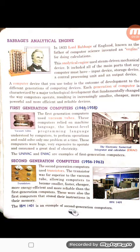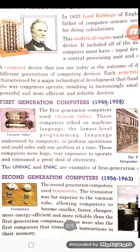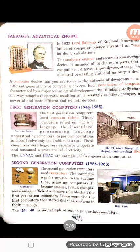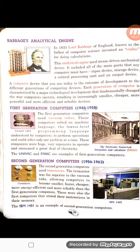In the second generation, computers used transistors. Transistors were much smaller compared to vacuum tubes, so the size of second generation computers was smaller than first generation computers. They were more faster and cheaper. The example of this is IBM 1401, which is given at the bottom of your book.